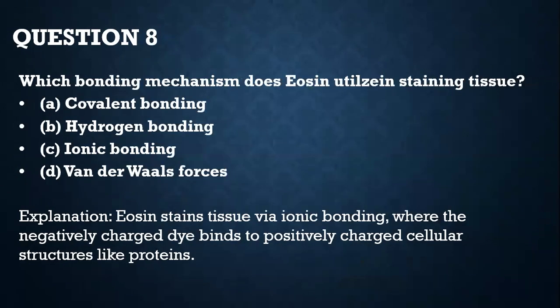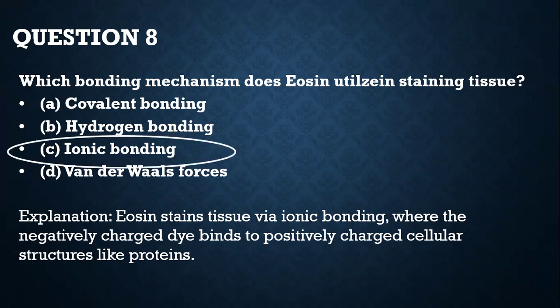Question 8. Which bonding mechanism does eosin utilize in staining tissue? It utilizes ionic bonding. Though there are other bonding types like coordination bonding and other weak bonding, principally eosin uses ionic bonding where the negatively charged dye binds to positively charged cellular structures like proteins.